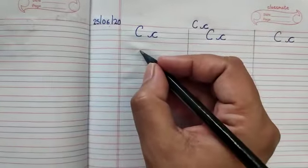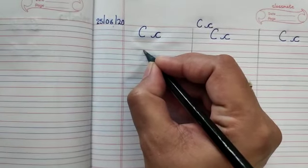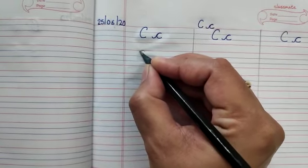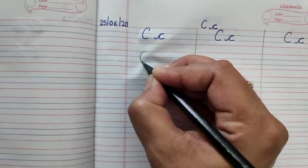Now we will write capital C and for that a big curve from top line to third line.